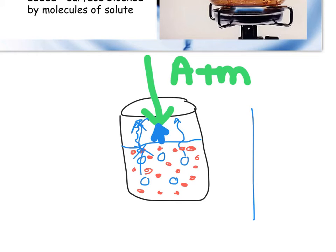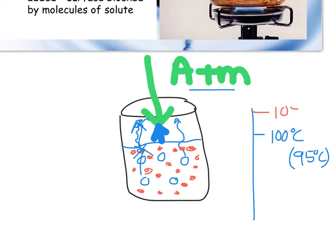Normally water boils at 100 degrees Celsius, or as we know here in Colorado, that's really about 95 degrees Celsius — that has to do with our altitude; we have less atmospheric pressure pushing down, so it's already easier for water to evaporate. But with a solution, it may raise up to maybe even 104 degrees Celsius. It raises that temperature because now those particles need to move even faster so they can push between the solute particles and actually get out. So boiling point will be elevated in the solution.